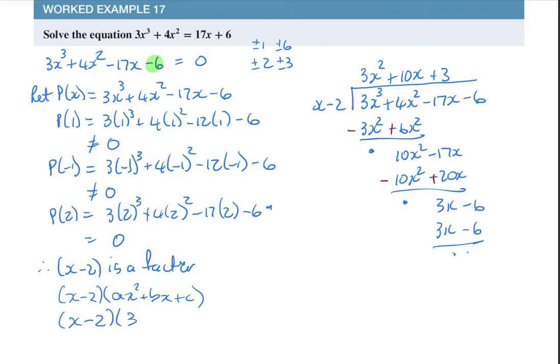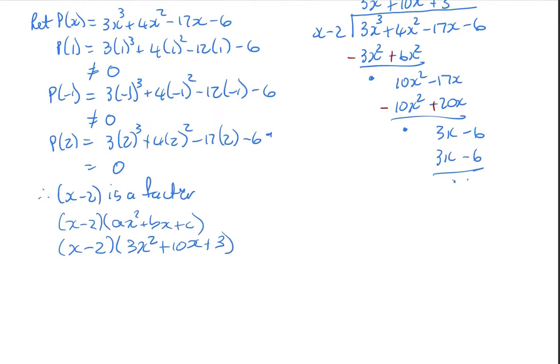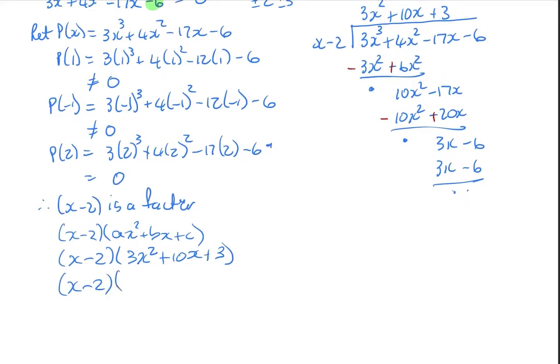I can therefore say, x minus 2 multiplied by 3x squared plus 10x plus 3, and I just have to factorize that, x minus 2, that's going to be 3x and x, I need to get to 10. So, times 10 is 1, positive, positive, which equals 0, so therefore, x equals 2, or x equals, for this one, it is subtract by 1, divide by 3, so that will be minus a third, or x equals negative 3 for the last answer.